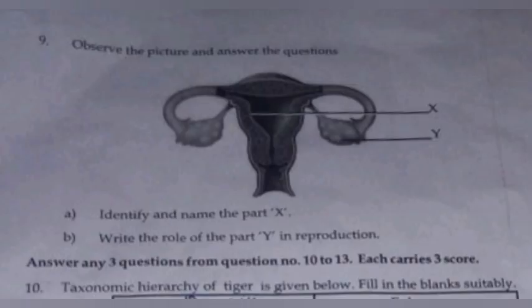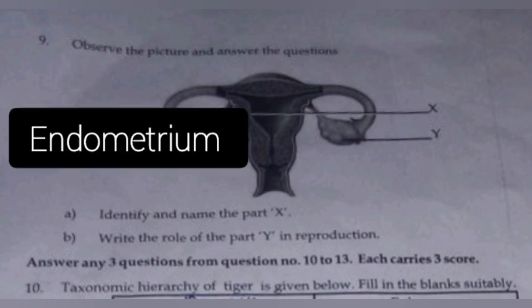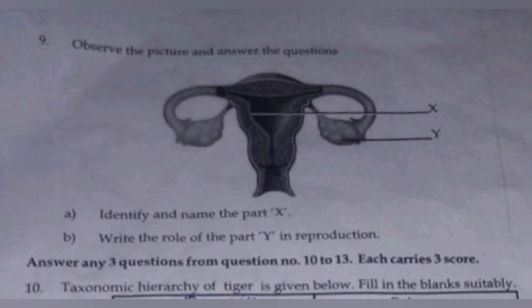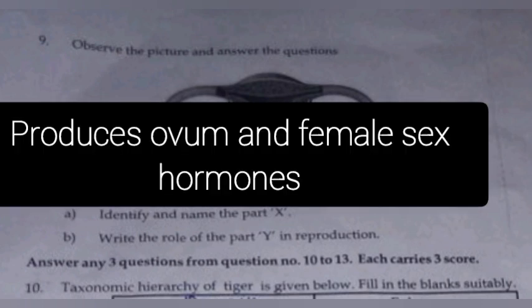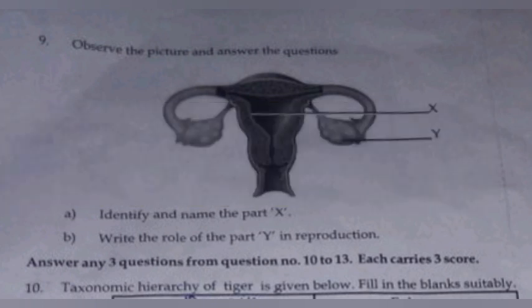Observe the picture and answer the questions. A. Identify and name the part X. Answer: Endometrium. B. Write the role of the part Y in reproduction. Answer: Produces ovum or female gamete.